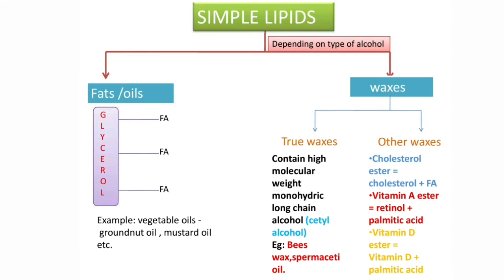What is the difference between fat and oil? Fat is solid at room temperature, whereas oils are liquid at room temperature. The composition of both is the same — glycerol plus three fatty acids. For example, vegetable oils, groundnut oil, mustard oil, and sunflower oil.